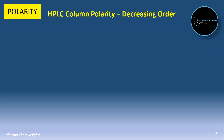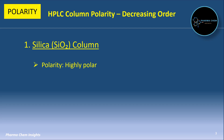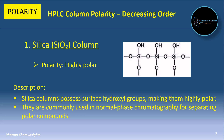Now let us see each stationary phase one by one. First is Silica — it is highly polar. Silica columns possess surface hydroxyl groups, as you can see in the structure, which makes them highly polar. They are commonly used in normal phase chromatography for separating polar compounds.